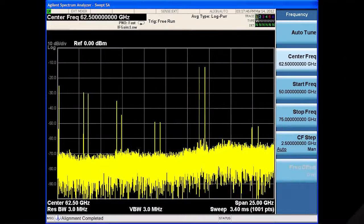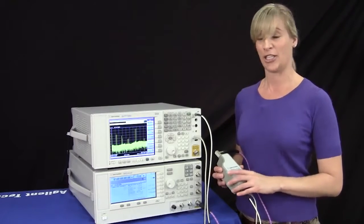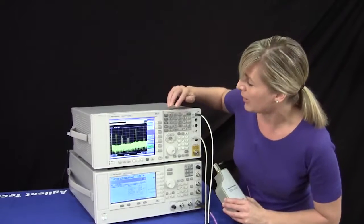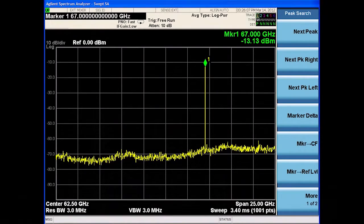As you can see, because this is a mixer we have mixing products as well as images, and the EXA comes with a signal ID function which is located underneath our input output key. When you turn signal ID on, your signal of interest is easily found and you're ready to make measurements.